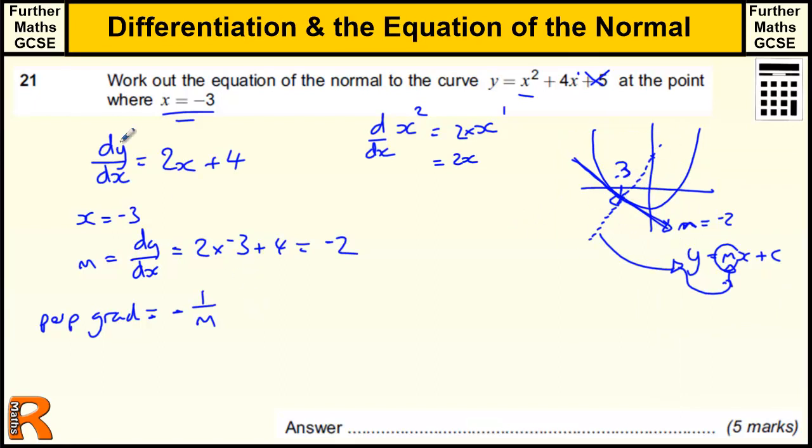So we've got minus 1 over minus 2, and those two minuses cancel, just leave us a half. So the perpendicular gradient, this gradient here is going to be a half. So if this is minus 2, this is going to be a half. So the line we're looking for is y equals a half x plus something, some value.